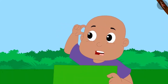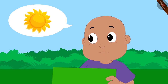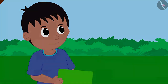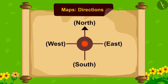Bablu asks how Raju recognized the directions on the map since there is no sun shown on it. Raju points to the compass and explains that this is called a compass, and using it we can determine the directions on any map. There is an arrow on it, and the head of the arrow always points towards the north.